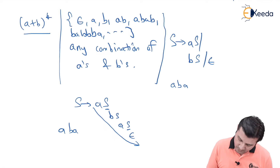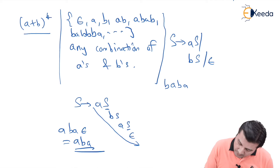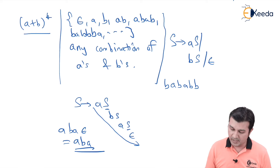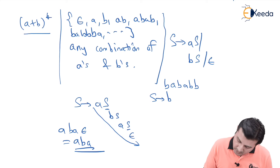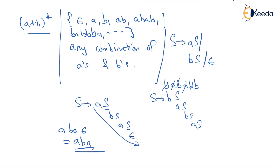Let's verify with another input, say 'bababb'. Starting: S → bS → baS → babS → babaS → bababS → bababbS → bababb·ε = bababb. The derivation works as expected. So for '(a+b)*', the equivalent context-free grammar is S → aS | bS | ε.